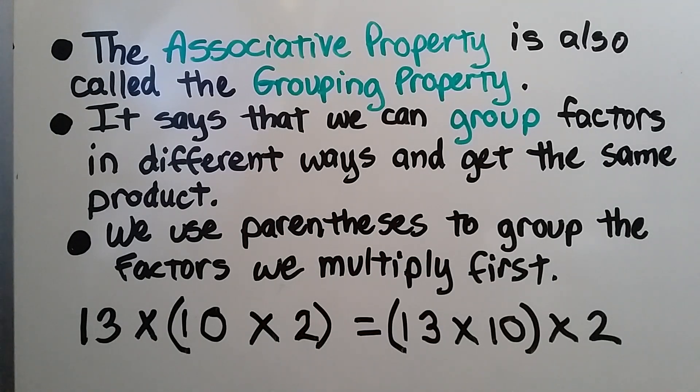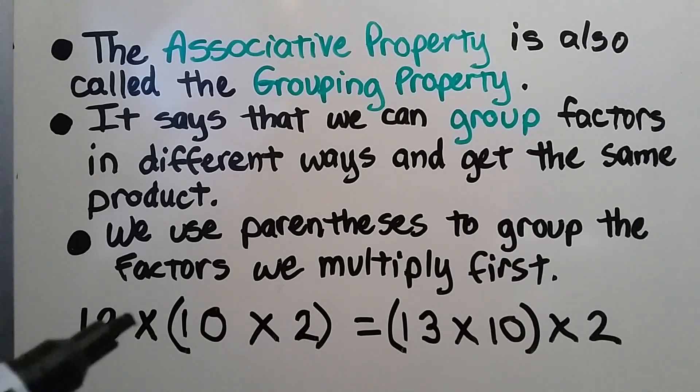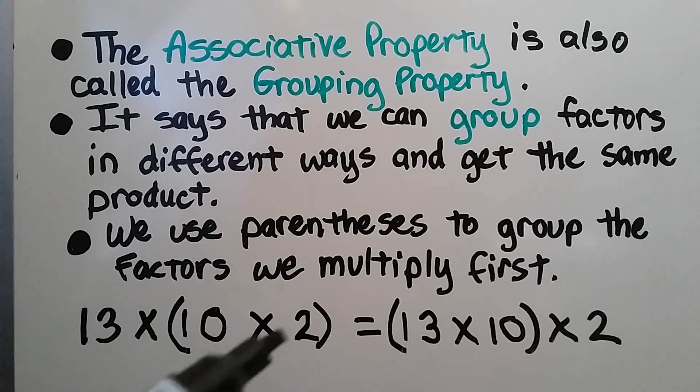So remember, the associative property is also called the grouping property. It says that we can group factors in different ways and get the same product. We use parentheses to group the factors we multiply first. So here we have 13 times 10 times 2. That could be a 20, couldn't it? We can move the parentheses and do 13 times 10 first, and then multiply that by 2. We just group them differently.